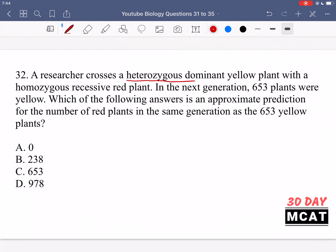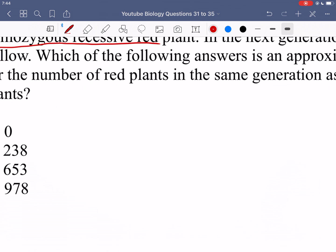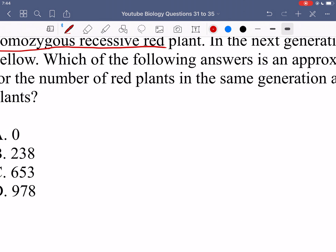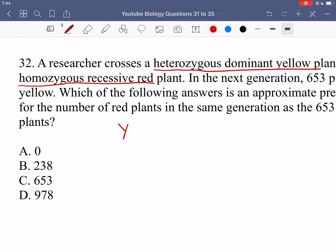First of all, we had a heterozygous dominant yellow plant and then homozygous recessive red. Let's just use Y for example as the allele. And then if we have heterozygous dominant, so Y and then a smaller y, we have the dominant allele and then the recessive allele. So we have a heterozygous one.